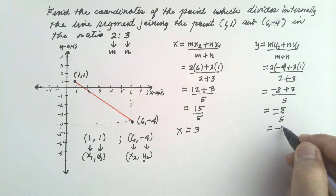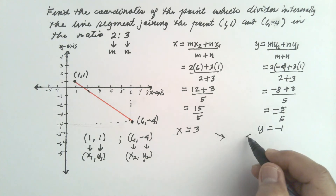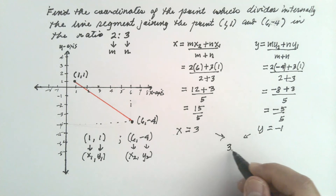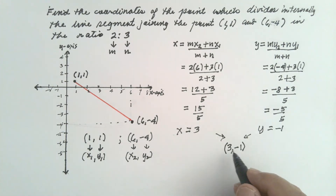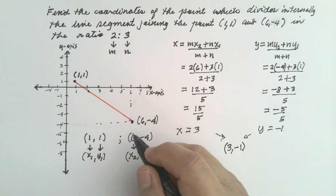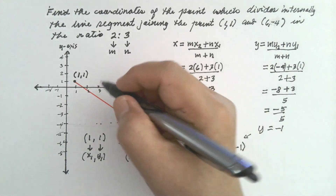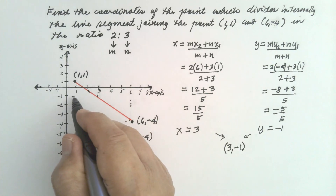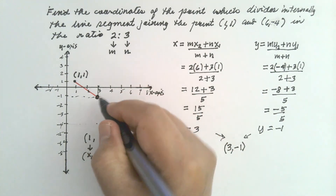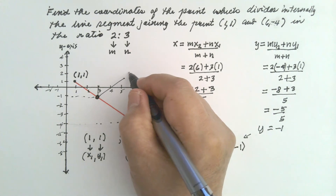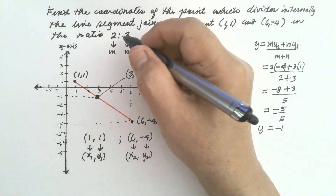So this is -1. Our coordinate is (3, -1). This point divides the line segment internally in the ratio 2 is to 3. Let's plot the point: 3, -1. This is the point (3, -1). It divides this line segment internally in the ratio 2 is to 3.